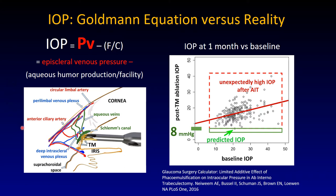That's the Goldman equation: if you really had eliminated all flow resistance, trabecular meshwork removal surgeries should produce a pressure of 8 mmHg, because that is the pressure found in episcleral veins. Setting the bar at 8, surprisingly in most studies almost nobody achieves this pressure. Here you can see one single patient out of 300 at that level.